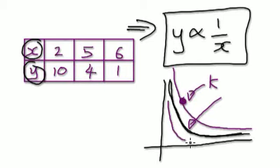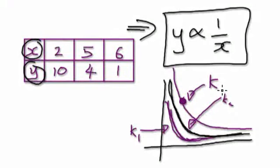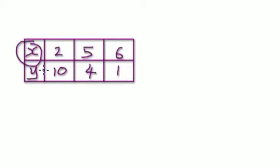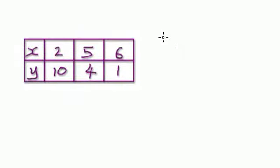If you have another graph like this, you could also say that Y is inversely proportional to X. It's just that the K values are different — call them K1, K2, and K3. All these Ks are different; the K represents the scenario that you're in. So, given this relationship between X and Y, can we truly say that Y is inversely proportional to X?